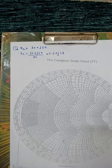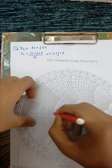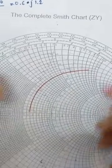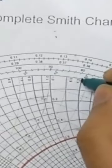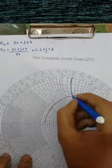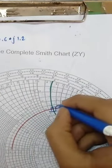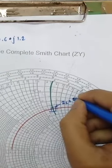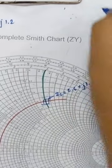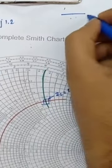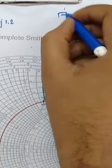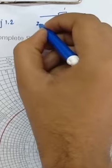After normalization, we plot this value on the Smith Chart. We locate 0.6 on the resistance axis and j1.2 on the reactance axis, and we get the point ZL = 0.6 + j1.2 plotted on the chart. This point represents our load impedance on the transmission line.